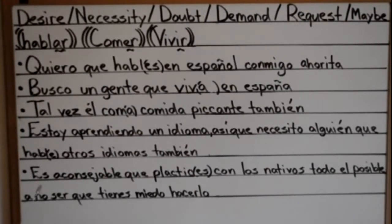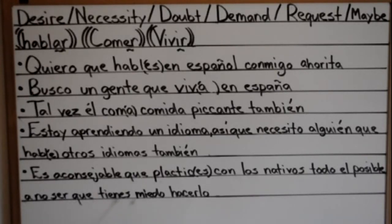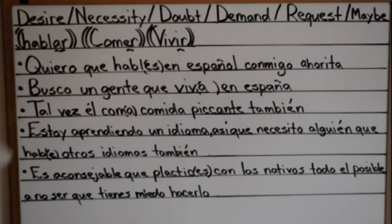Breaking that sentence down: 'es aconsejable' — it is advisable; 'que practiques' — that you speak; 'con los nativos' — with the natives; 'todo lo posible' — as much as possible; 'a no ser que' — unless; 'tienes miedo' — you have fear; 'hacerlo' — to do it, where 'hacer' means to do and 'lo' refers to the object. So: it is advisable that you speak with natives as much as possible, unless you are afraid to do it.